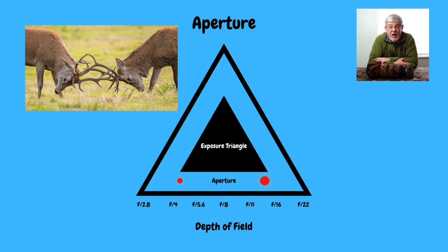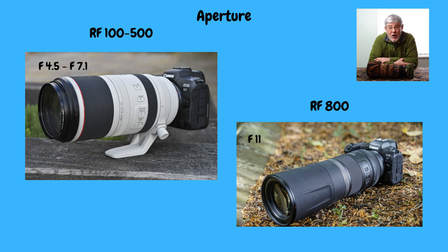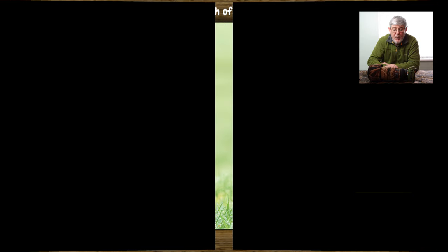The optimum apertures are around f/5.6 up to about f/8. What to use depends on the lens you have and the subject you're photographing. Typically with my two lenses, I always shoot at f/7.1 or f/8 on the 100–500, and on the 800mm I have no option but to shoot at f/11. One recommendation in wildlife photography is to focus on your subject and make it stand out or pop. You're looking to blur out your foreground and background so that your subject pops out and sits within that depth of field.